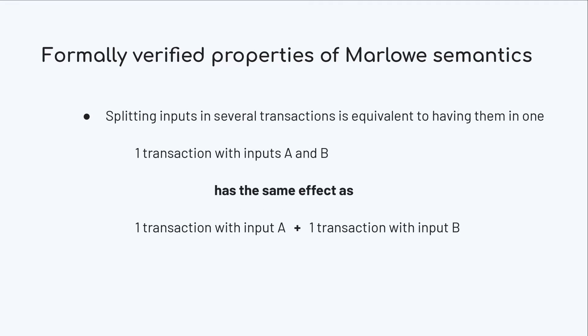Marlowe allows several inputs per transaction, but we have also proven that even though you can combine several inputs in a transaction, if you apply them separately in several transactions, that is equivalent from the point of view of Marlowe semantics.